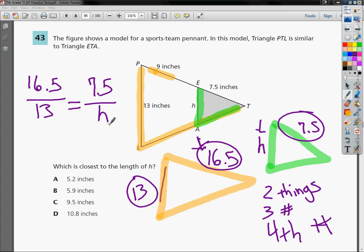Then I'm going to do cross multiply and divide. So I do 13 times 7.5, which I think is 97.5. I'm going to check so I don't tell you the wrong thing. This gives me 97.5. And then I do 16.5 times H.